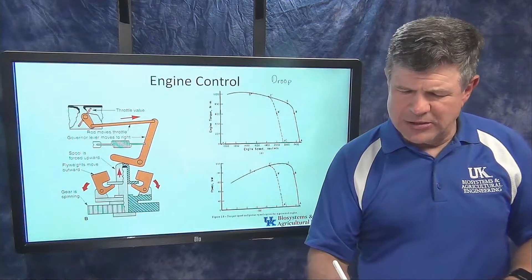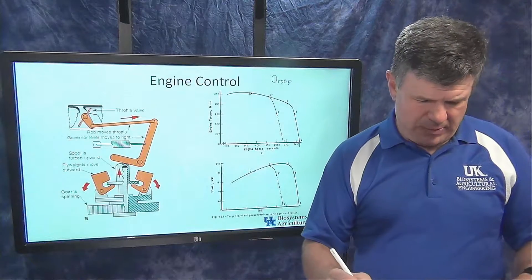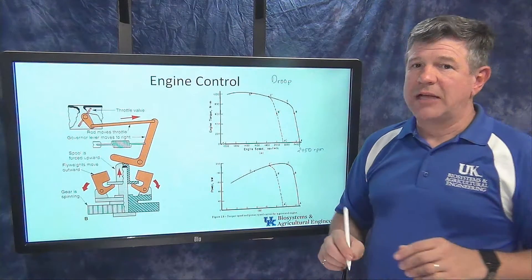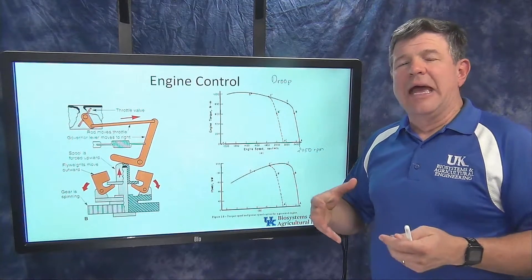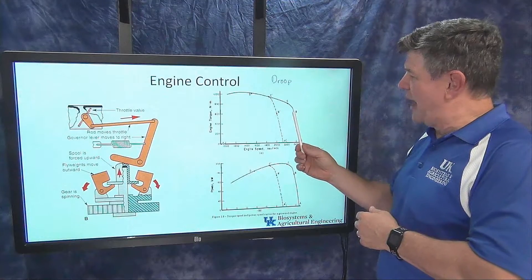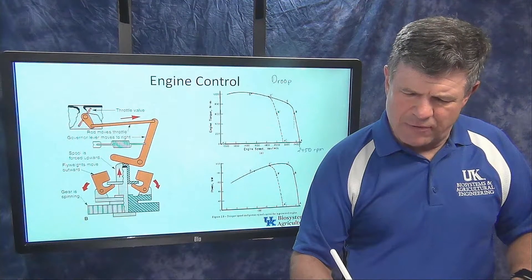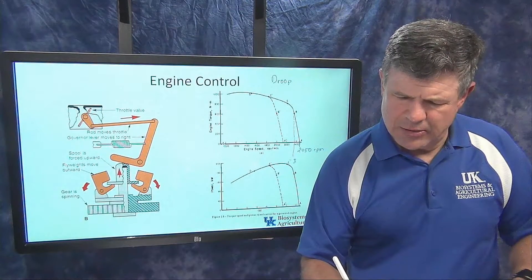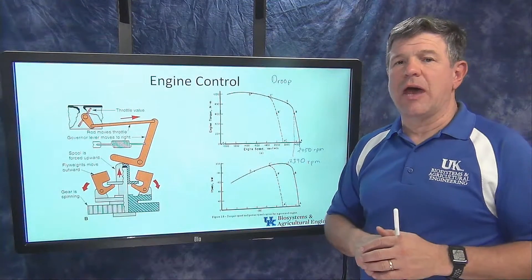Looking at this example on the graph — it's kind of small but — the wide open speed with no load looks to be about 2,450 RPM. Now if I put some load on it, the governor tries to respond and react. As I do that, the engine is still going to slow down a little bit. The governor works hard to control that speed, but there will be some speed variation. Going back to the shoulder point, labeled B on the graph, where the governor stops, and drawing a vertical line down, I'm estimating that speed to be about 2,390 RPM.